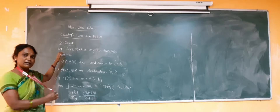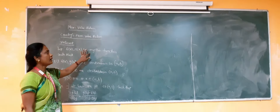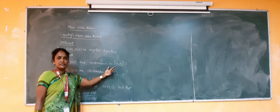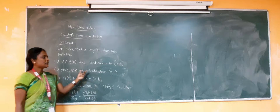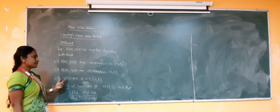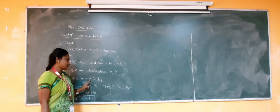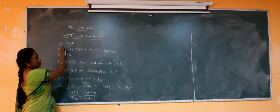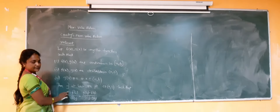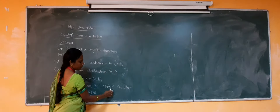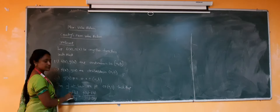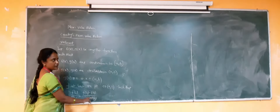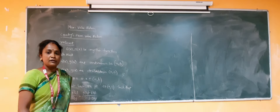Once again to summarize Cauchy's mean value theorem: f and g are any two functions such that f(x) and g(x) are continuous on closed interval [A, B], derivable on open interval (A, B), and g'(x) ≠ 0 for x in (A, B). If f and g satisfy these three conditions, then Cauchy's mean value theorem is applicable, and there exists at least one point c in (A, B) such that f'(c) / g'(c) = [f(b) − f(a)] / [g(b) − g(a)].